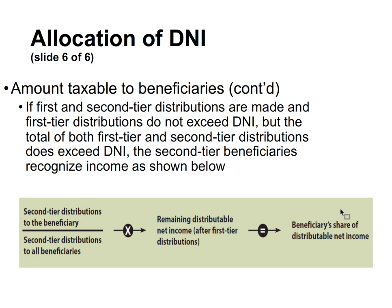If both first and second tier distributions exist but the first tier does not exceed DNI, yet the total of both tiers does exceed DNI, then second tier beneficiaries recognize income using this formula: (second tier distributions to beneficiary ÷ second tier distributions to all beneficiaries) × remaining DNI after the first tier. So the first tier beneficiaries get their full distribution allocated from DNI first, and then whatever DNI remains is allocated among second tier beneficiaries using that formula.